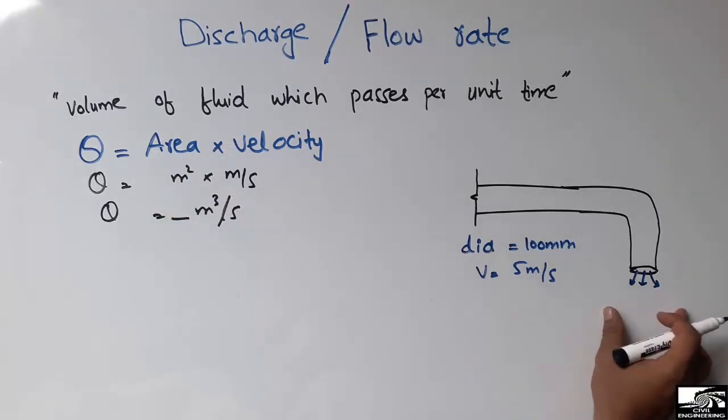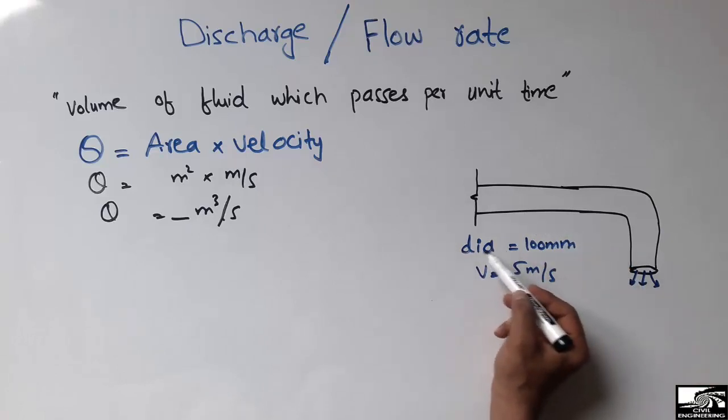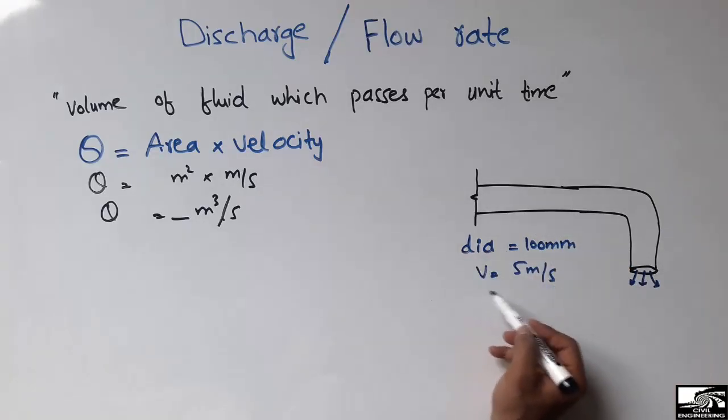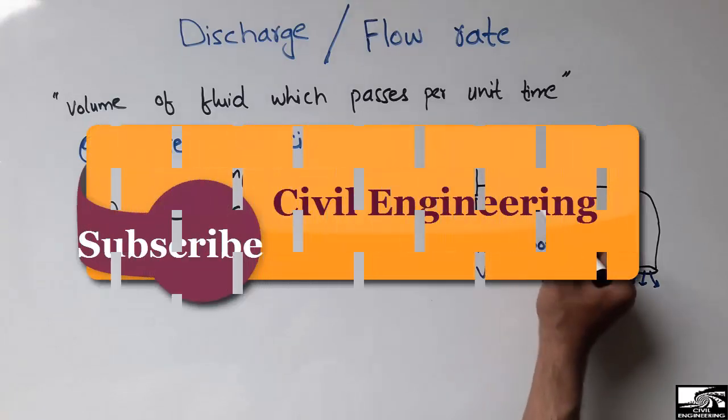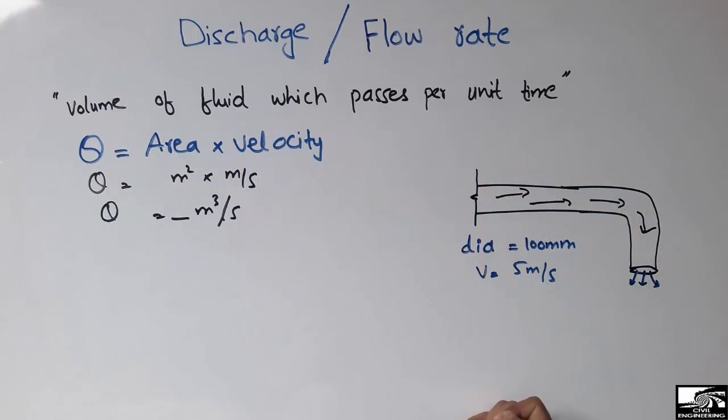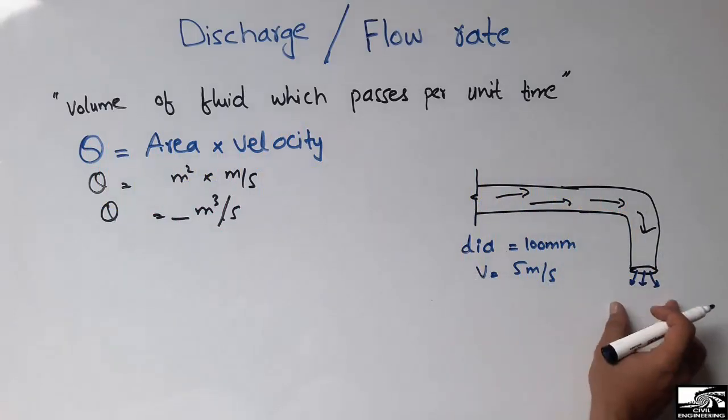So let's consider this example. The pipe has a diameter - you can see the diameter of this pipe is 100 millimeter. And the fluid which is flowing through this pipe is flowing at a velocity of 5 meter per second. Now to find the discharge, how much is the discharge of this pipe...